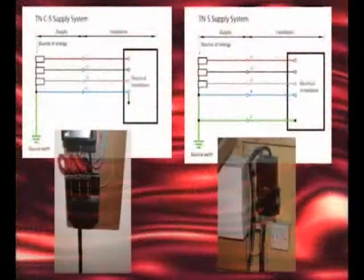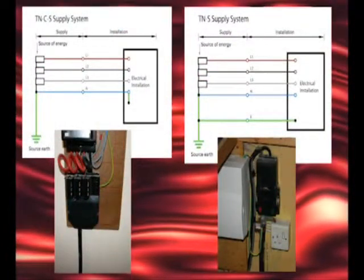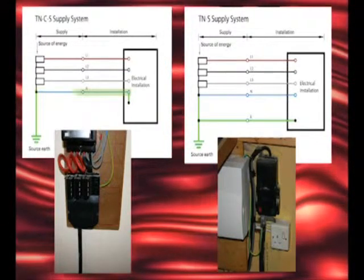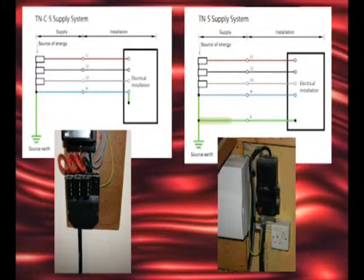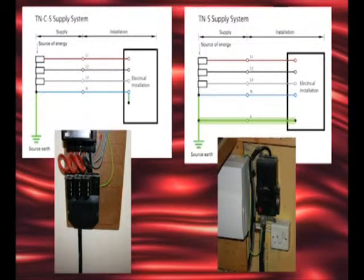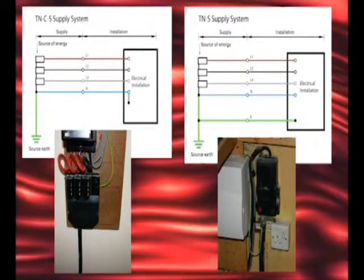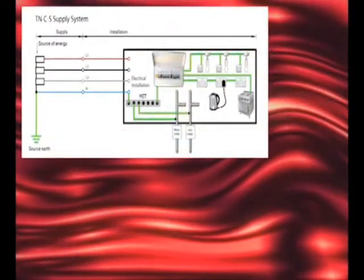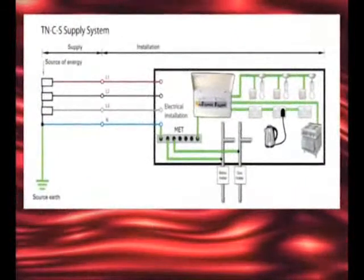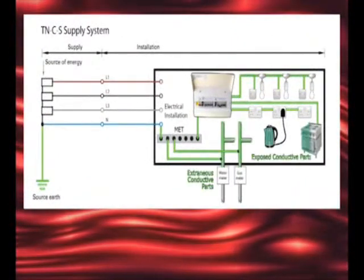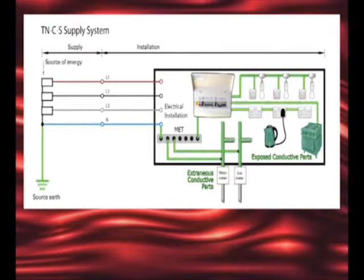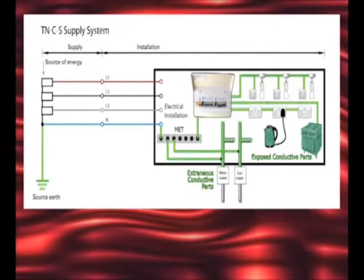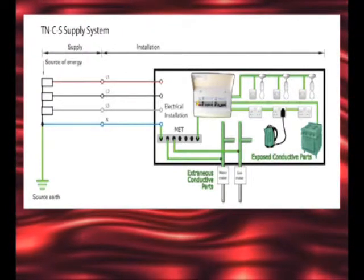TN systems often provide a low impedance path for Earth fault currents by adopting either the existing supply neutral conductor in a TN-CS system, or a separate protective conductor such as the metallic sheath of an armoured cable in a TN-S system. For this to work as a complete protective system, all extraneous and exposed conductive parts within the installation must be connected to the external earthing arrangement and will then be regarded as being at the same electrical potential as Earth.